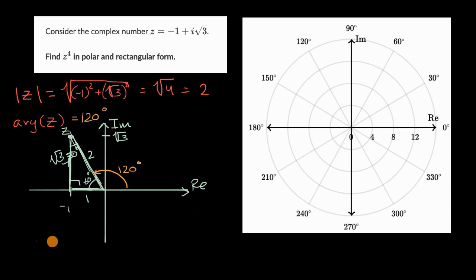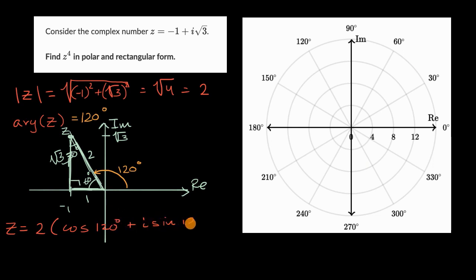Just like that, we can now think about z in polar form. We can write z equal to its modulus two times the cosine of 120 degrees plus i times the sine of 120 degrees. We can also visualize z: its modulus is two, halfway to four, and its argument is 120 degrees, putting us right over here.